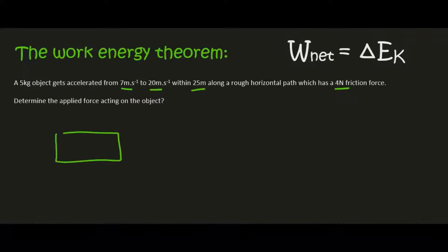Okay, so we've got this object and there's some type of force acting to the right. Let's just pretend it's going to the right. It's a 5 kilogram object. There is friction which is 4 newtons and we need to try to work out what this force is.